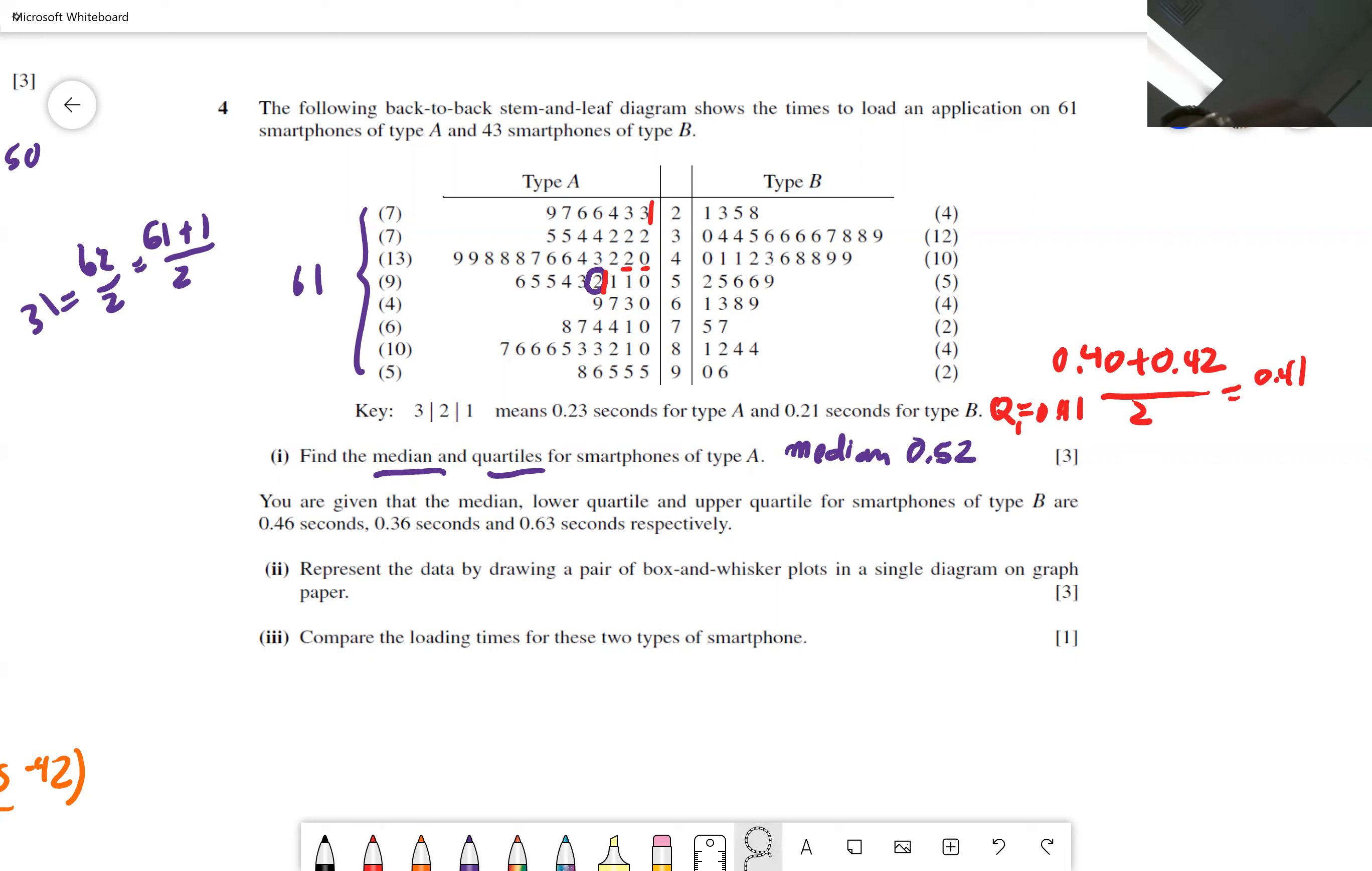Now, the next one, you do the same thing. You count from after 0.52. 1, 2, 3, 4, 5, 6, 7, 8, 9, 10, 11, 12, 13, 14, 15. So it's this guy and this guy. So you're going to get 0.78 plus 0.80 divided by 2, which is 0.79. So your third quartile is 0.79. And guess what? You just got three points.